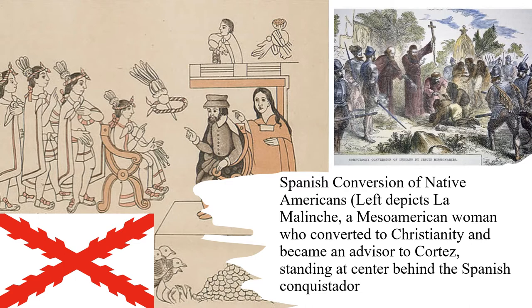Spain was a Catholic power and was very interested in spreading Catholic Christianity to the people of the Americas, whom they recognized were not Christians. Native Americans did not practice any religions that Europeans were familiar with, like Buddhism, Judaism, or Islam. Spanish colonizers from the beginning of their expeditions would try to convert Native Americans to their faith, hoping to use these converted Natives as guides who would show them the wealth of the New World, and who would act as intermediaries between the settlers and other indigenous people while also spreading the Christian faith.